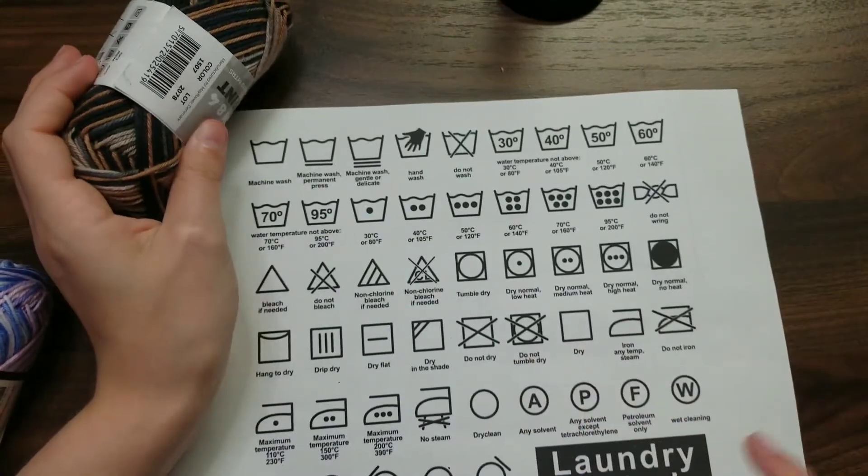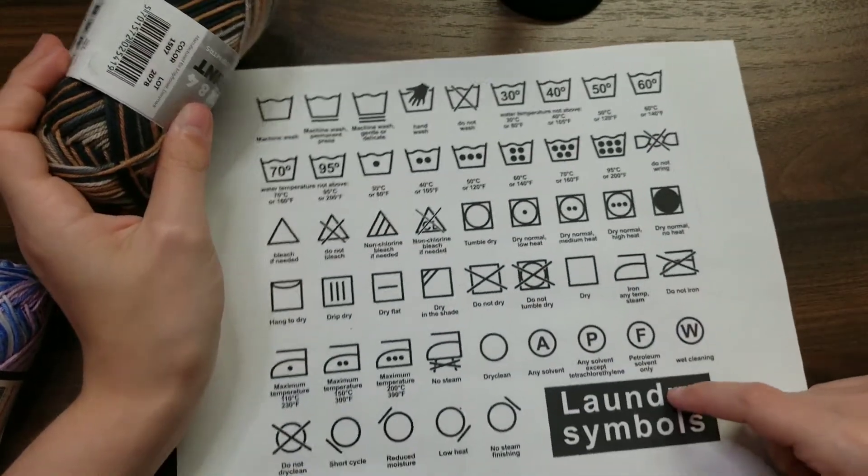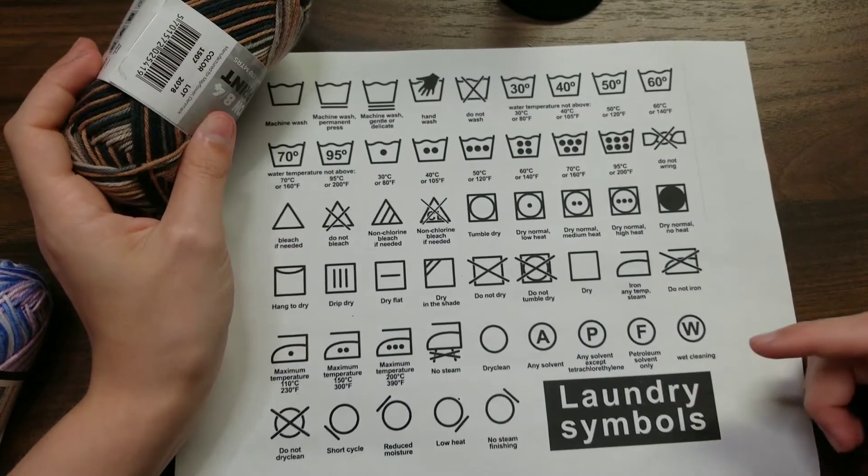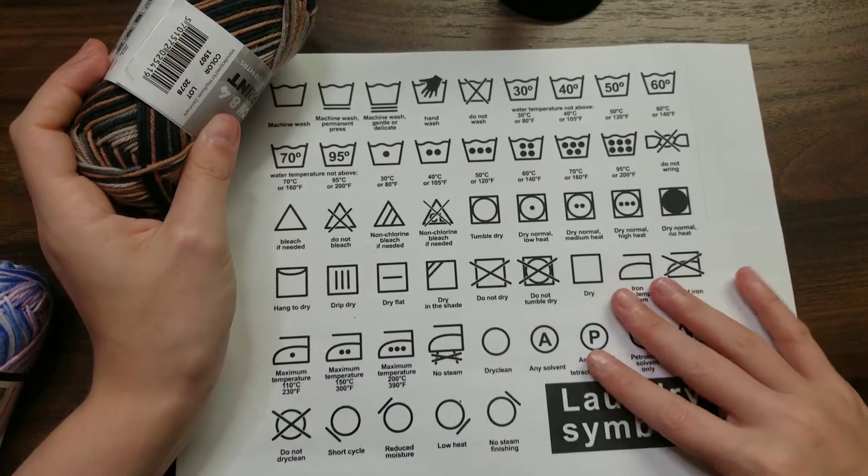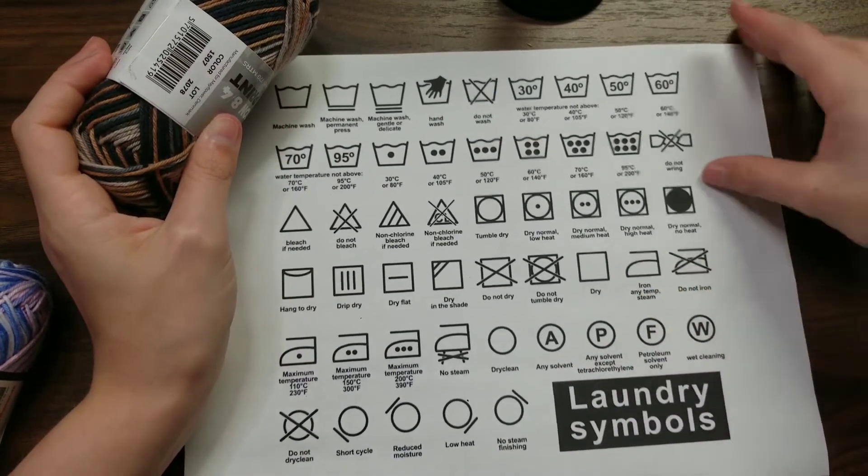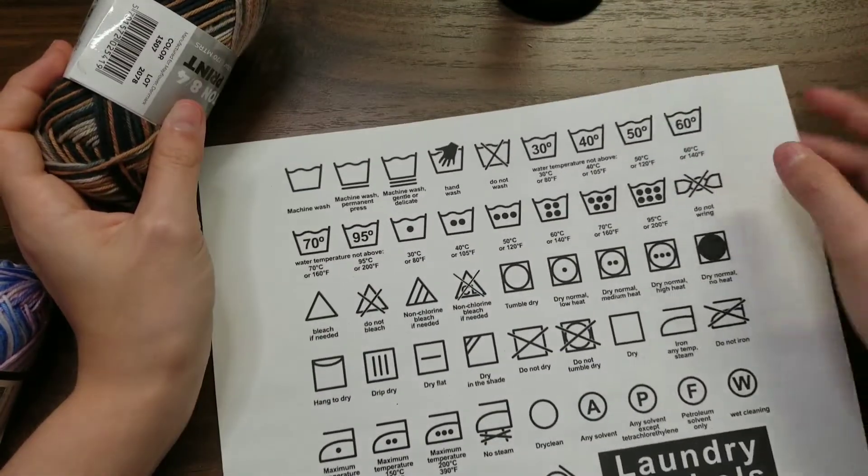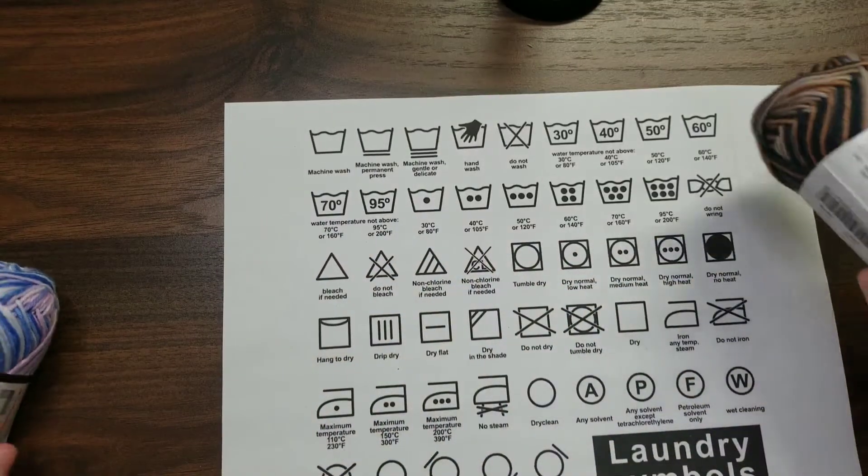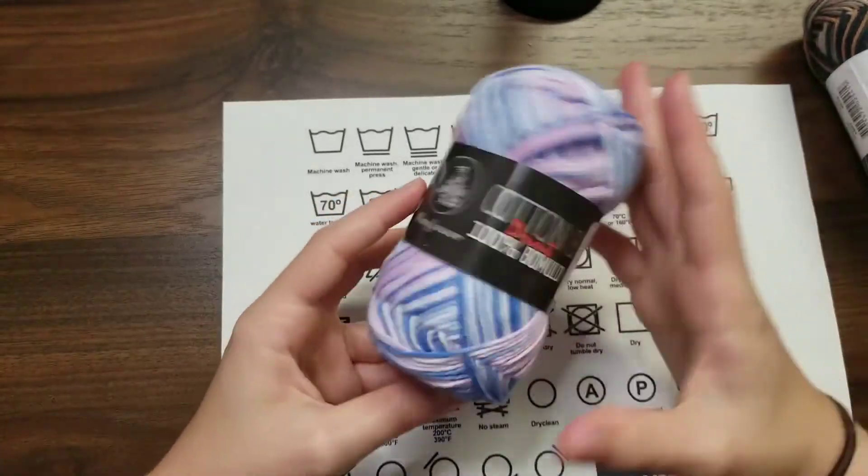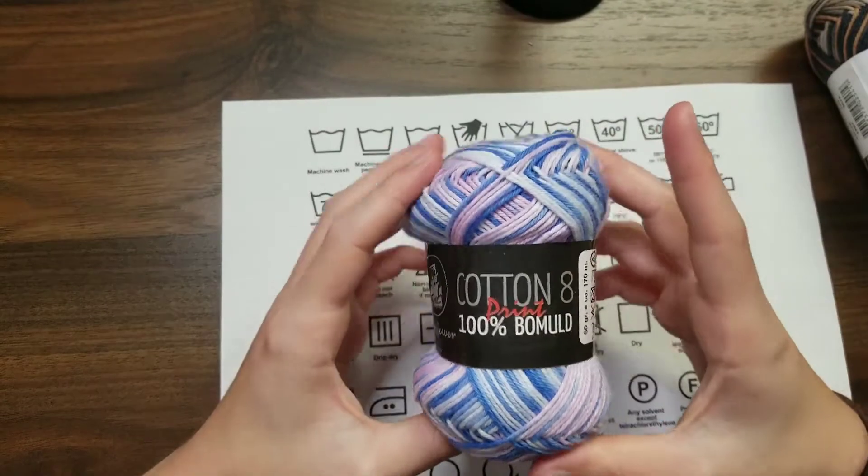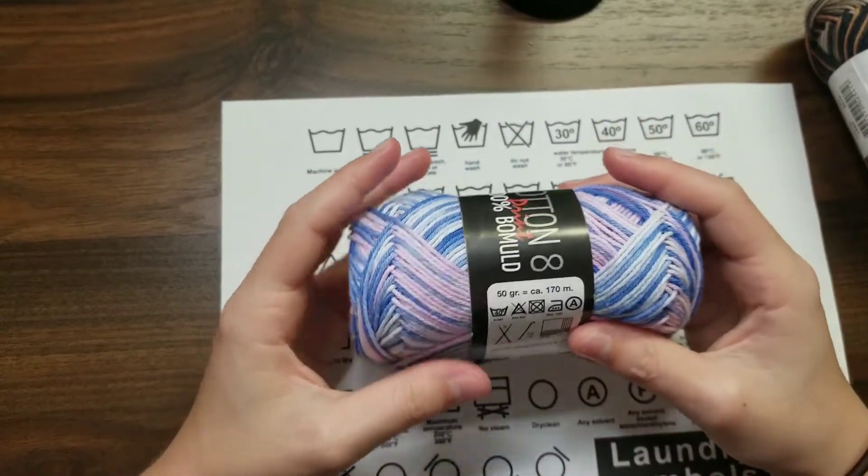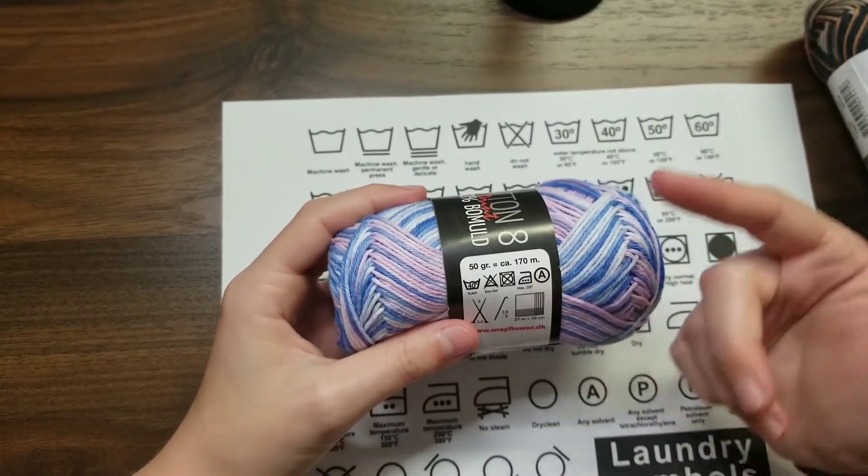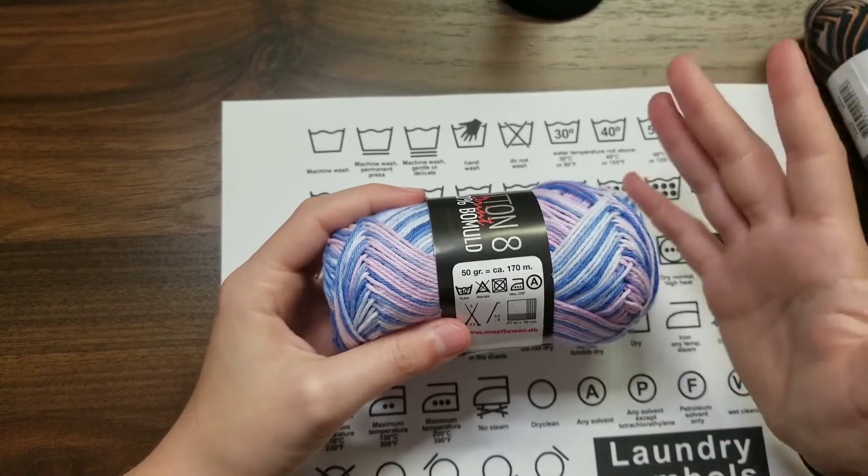But anyways, if you are looking to get this chart, you can go on Google and just look up yarn laundry symbols or just yarn symbols. Then this will come up. I had to adjust it so that I could print it through Google Docs. But anyways, let's move on to the next one. Now, this one here is the 100% Beaumauld one. And again, it is 50 grams and 170 meters or 195 yards, as I believe.